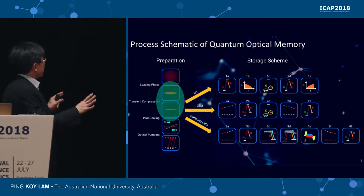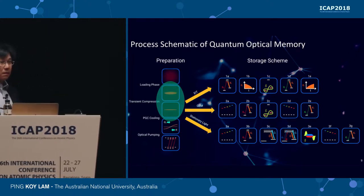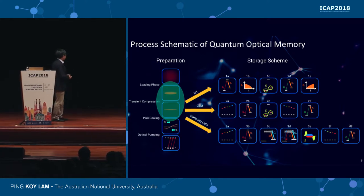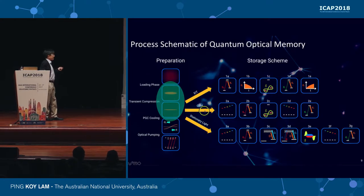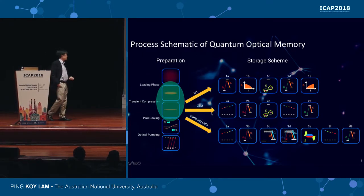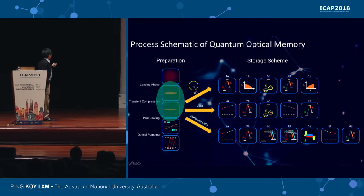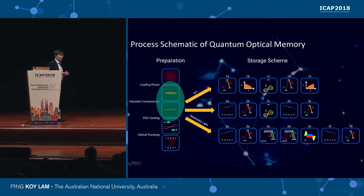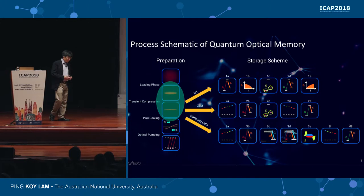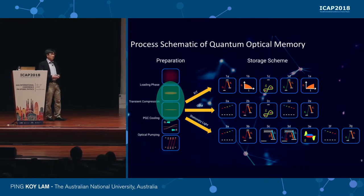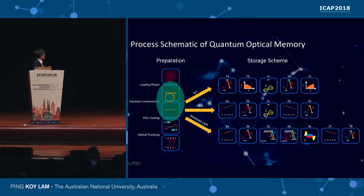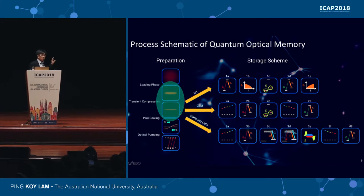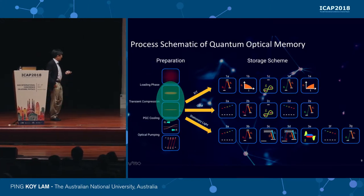Here's a complete schematic of what we normally do with our rubidium magneto-optical trap. You can use it to store light using EIT, using gradient echo memory, or implement stationary light. But all of this requires preparation with very large optical density to increase the efficiency and get all the processes to work ideally. For the remainder of the talk, I will only focus on the loading phase and the transient compression, and this is where we implement machine learning for our experiment.